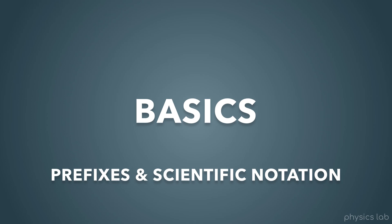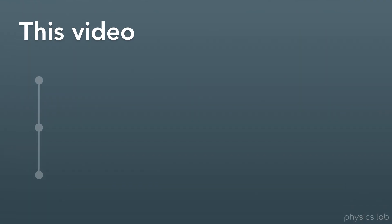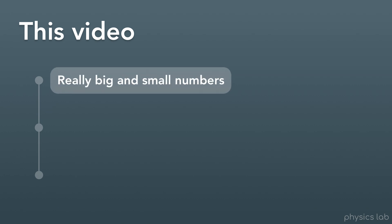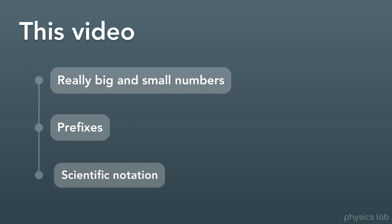Hey everyone, welcome to this video on prefixes and scientific notation. These are things that we use as a way to write big and small numbers, and they show up in almost every physics problem. In this video, we'll cover really big and small numbers and different ways that we can write them. Then we'll learn about prefixes and how to use them. And last, we'll cover scientific notation, how it works, and an easy method to write any number using scientific notation.